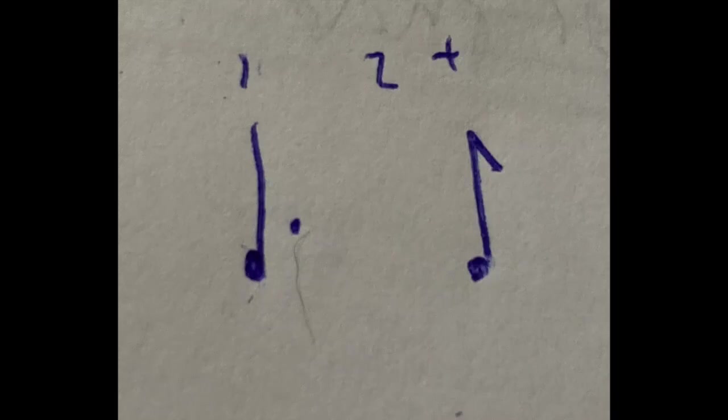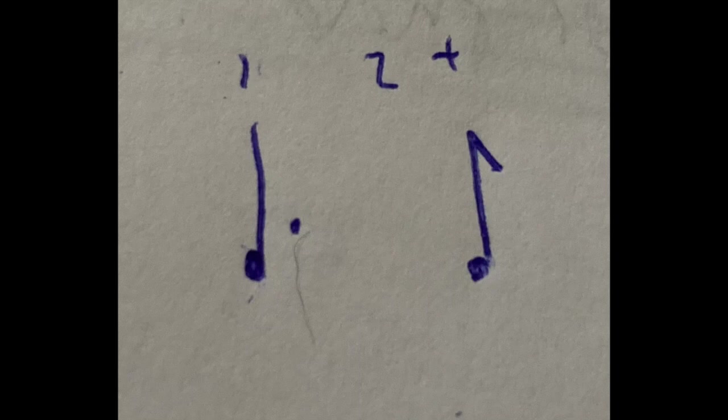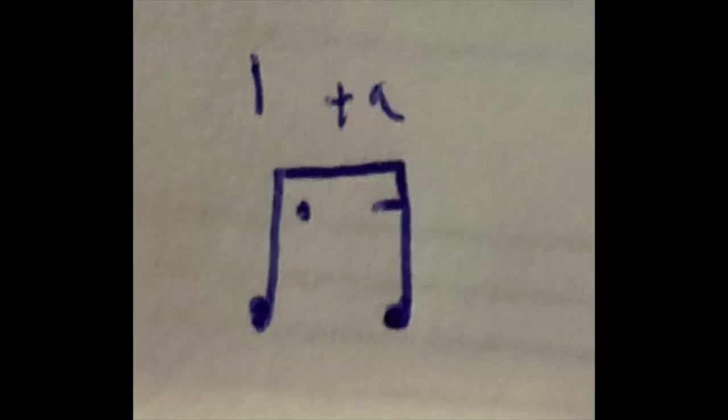So the last thing we have to talk about is the dotted note. So right here we have a dotted quarter note followed by an eighth note. So what a dot means in music is that we simply play the value of the note before it plus half of the value of that note. So in this case with the dotted quarter note, we're going to play one quarter note plus one eighth note. So right here I wrote that it's counted like 1 and - one quarter note plus one eighth note.